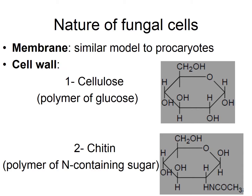This is the cell wall composition — it is usually made of cellulose and chitin. Cellulose, as you can see here, is a polymer of glucose, and chitin is another sugar that contains nitrogen. You can see nitrogen-containing sugars here. So the cell wall composition is quite different from bacteria, which is why we stain them a little bit differently.